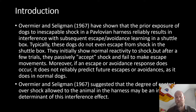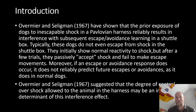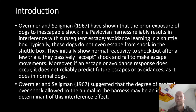In the introduction, the authors review some previous research, some of which was done by one of the authors. They found that prior exposure of dogs to inescapable shock in what's called a Pavlovian harness — which keeps the animals in one position so they can't run away — results in interference with subsequent escape or avoidance learning in a shuttle box. Dogs trained that they cannot escape shock will typically not try to escape when given the opportunity, and after a few trials will passively accept the shock and fail to make escape movements.